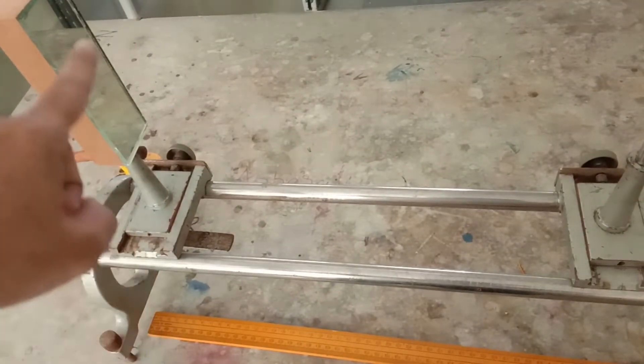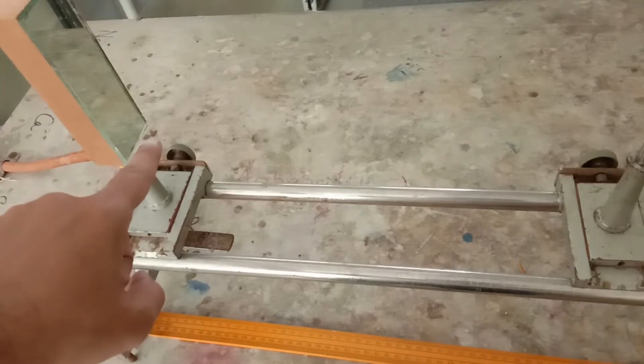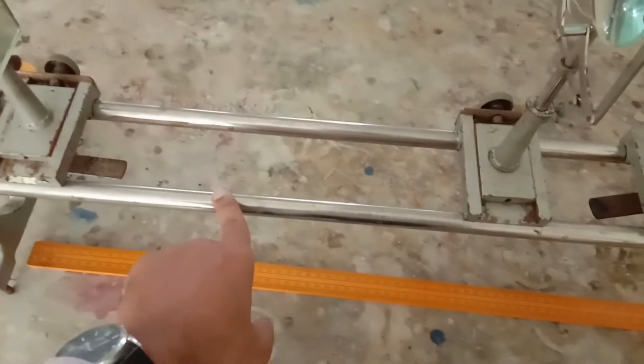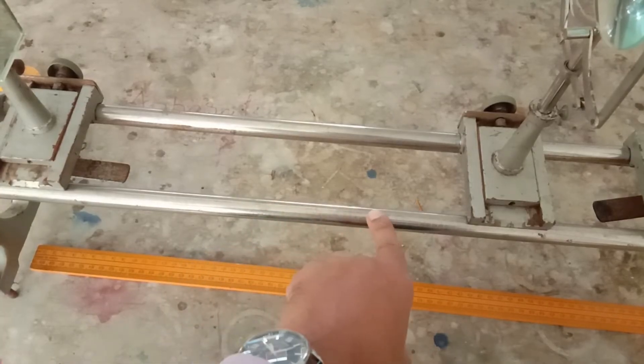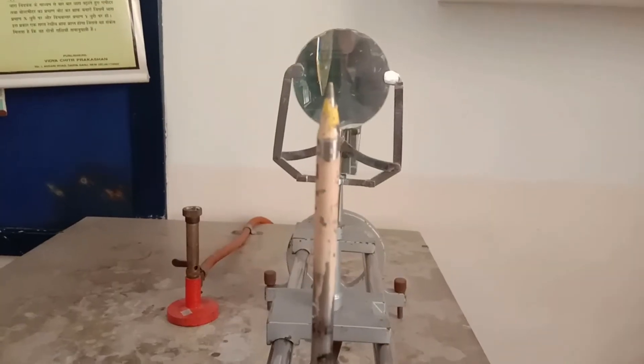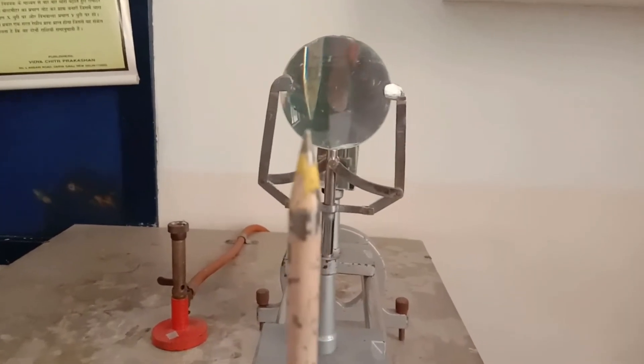This is a plane mirror fixed on a holder. Lens, plane mirror, and the object pin are all movable on the optical bench. The plane mirror during this entire experiment is not to be moved at all. This is an optical bench. It shows the reading from 0 to 100 centimeters. Its least count is 0.1 centimeter.